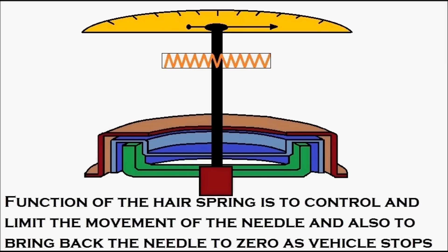And let's see the function of the hairspring. The function of the hairspring is to control and limit the movement of the needle and also to bring back the needle to zero as the vehicle stops. You can see the hairspring is getting energized as the needle moves, and it controls and limits the movement, which indicates the correct speed on the dial.